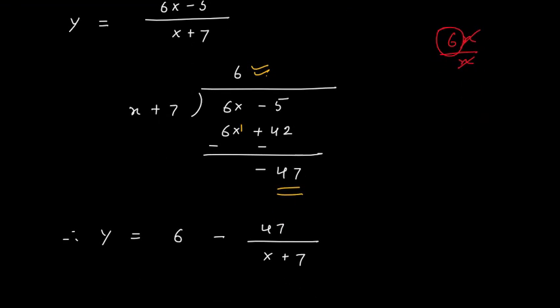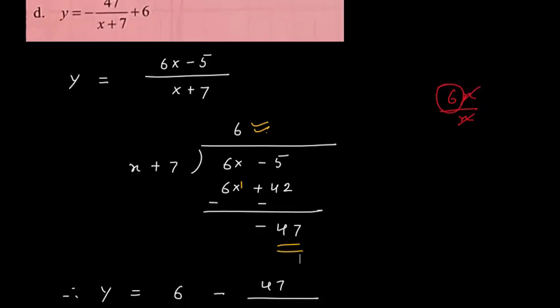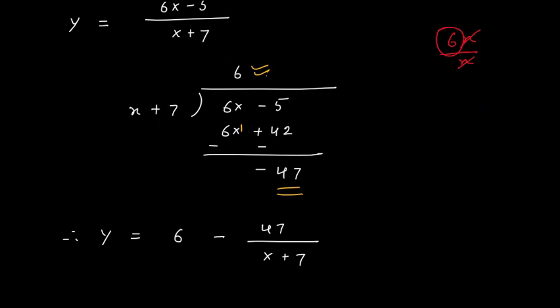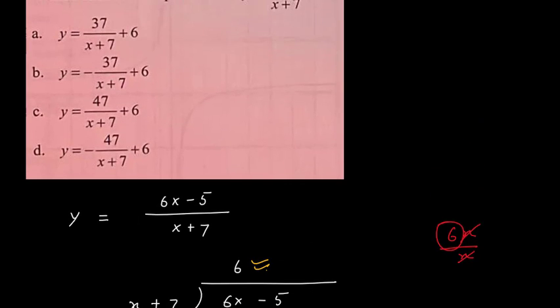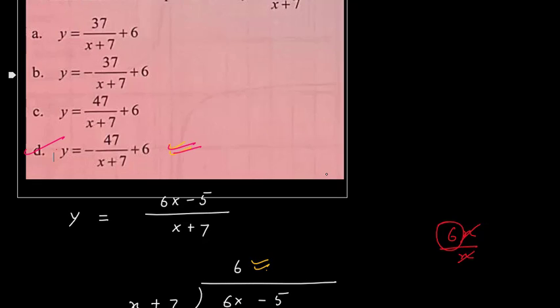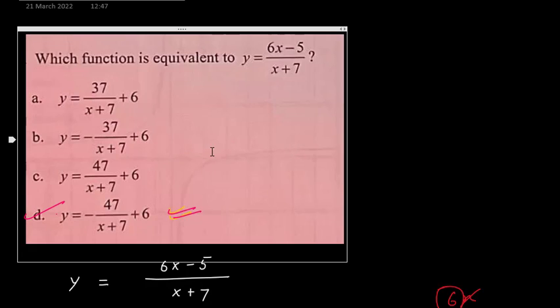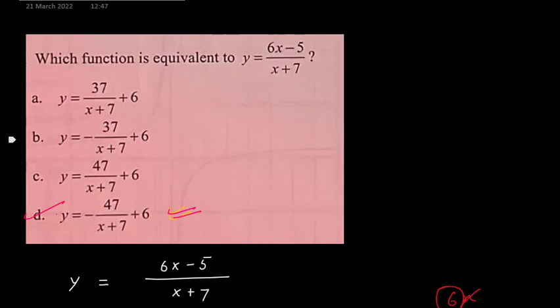Therefore, I can write this y as quotient which is 6, and remainder is negative, so I will say minus 47 divided by x plus 7. Comparing this, you will find that option D is matching with the solution we got. So D is the right answer.